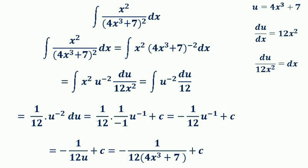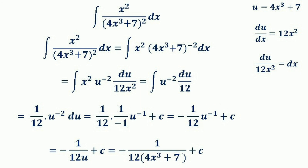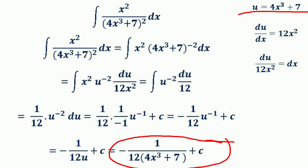Taking u⁻¹ into the denominator gives −1/(12u) + c. Now substituting u = 4x³ + 7, the final result is −1/(12(4x³ + 7)) + c.